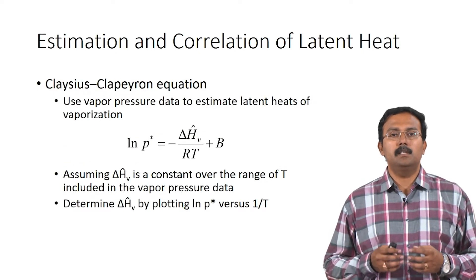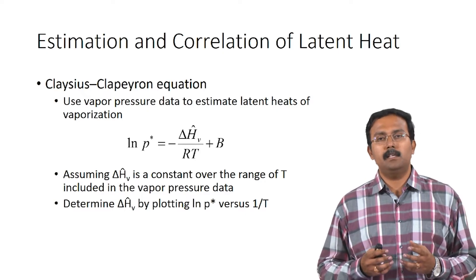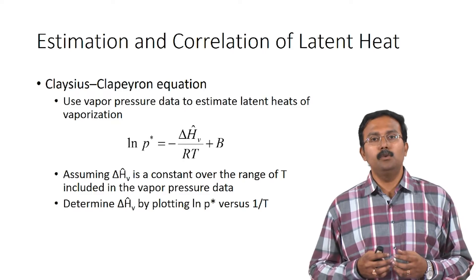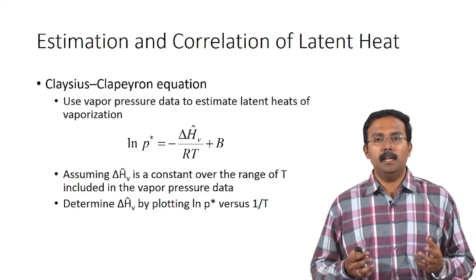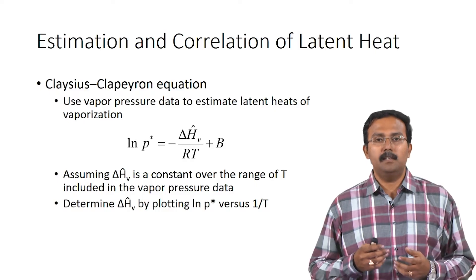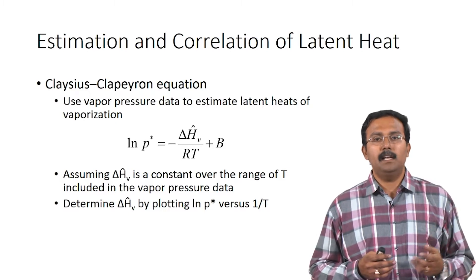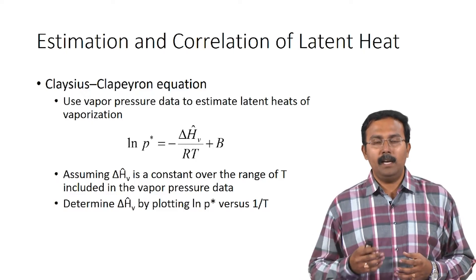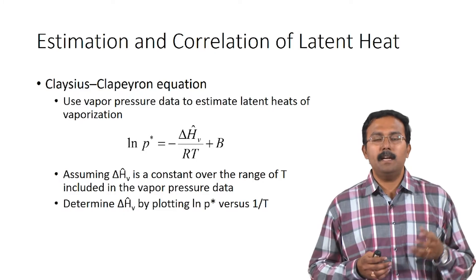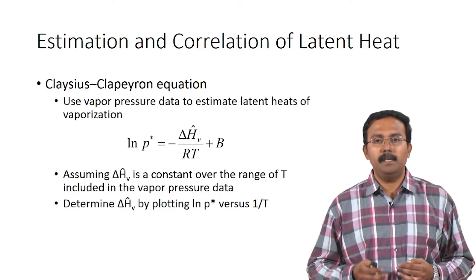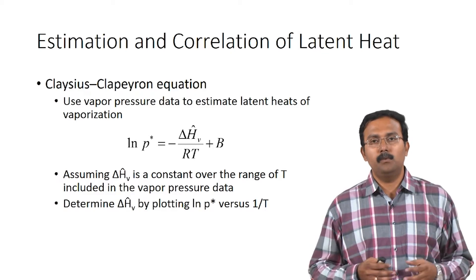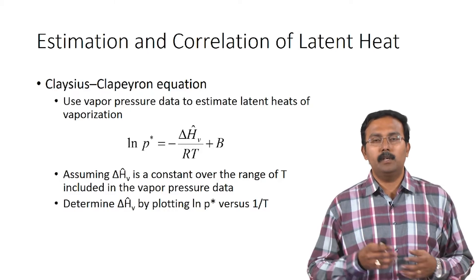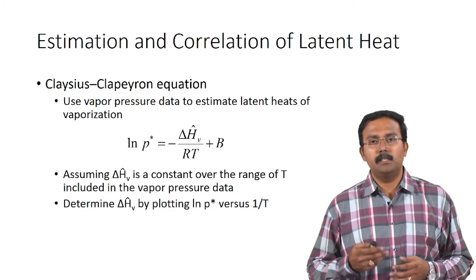The Clausius-Clapeyron equation is another equation which can be used to estimate the heat of vaporization. It uses vapor pressure data to estimate the latent heat of vaporization. The equation is: ln(P*) = −ΔHv / RT + B. Assuming ΔHv is constant over a range of temperature, you can estimate ΔHv by plotting ln(P*) versus 1/T, which gives −ΔHv / R as the slope, from which you can calculate ΔHv.